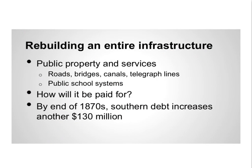Expanding the railroad was not the only industrial effort during this time — the entire infrastructure of the South needed to be rebuilt. Infrastructure, a key term, refers to public property and services: roads, bridges, canals, telegraph lines, railroads, and public school systems. All of that needed to be either rebuilt or created during Reconstruction. While public school systems had existed in the North for many years, the South saw public schools and public school districts emerge for the first time during this period.